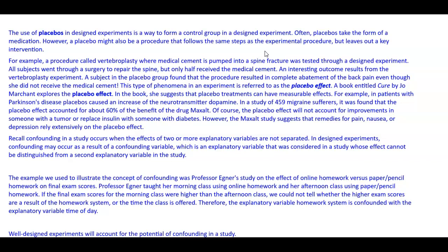This type of phenomenon is referred to as the placebo effect. A book entitled Cure by Jo Marchand explores the placebo effect, suggesting that placebo treatments can have measurable effects. For example, in patients with Parkinson's disease, placebos caused an increase of the neurotransmitter dopamine. In a study of 459 migraine sufferers, it was found that the placebo effect accounted for about 60% of the benefit of the drug Maxol. The Maxol study suggests that remedies for pain, nausea, or depression rely extensively on the placebo effect.